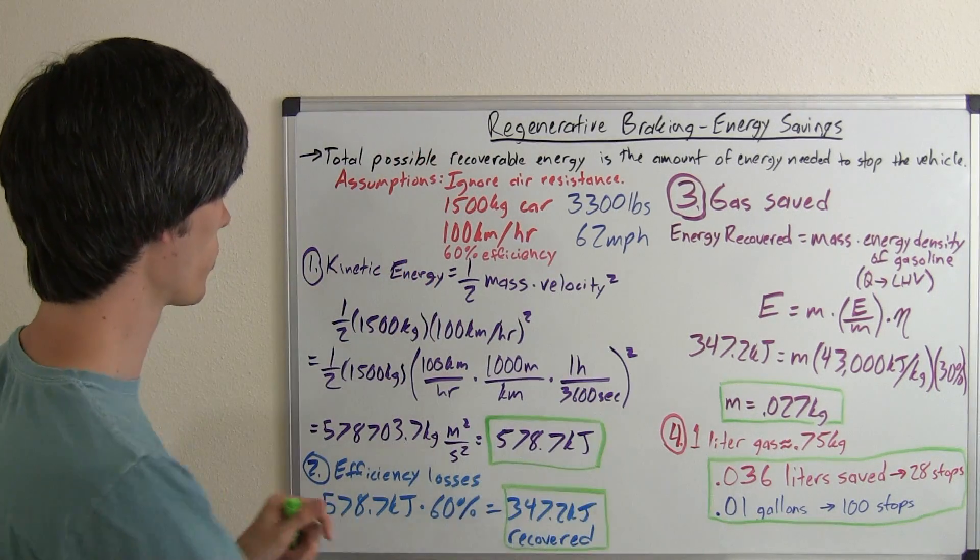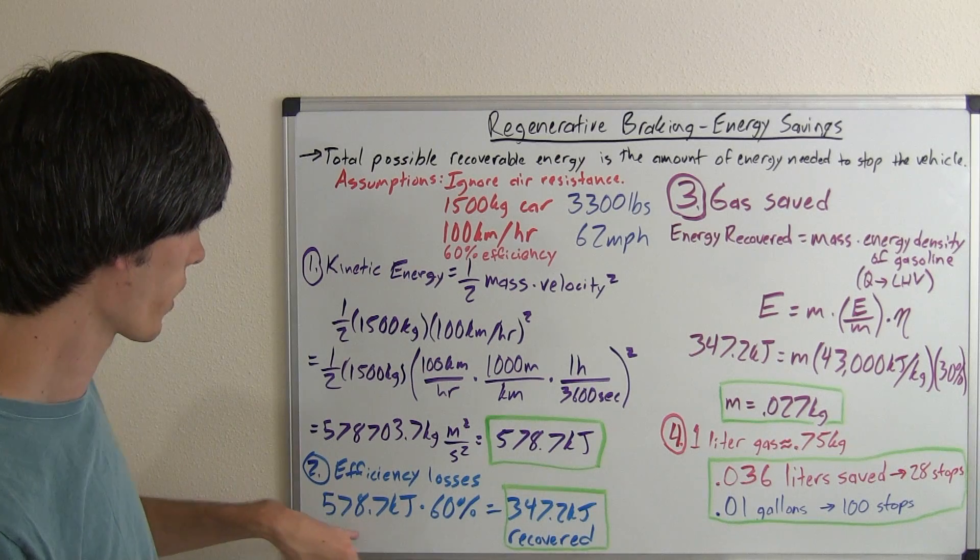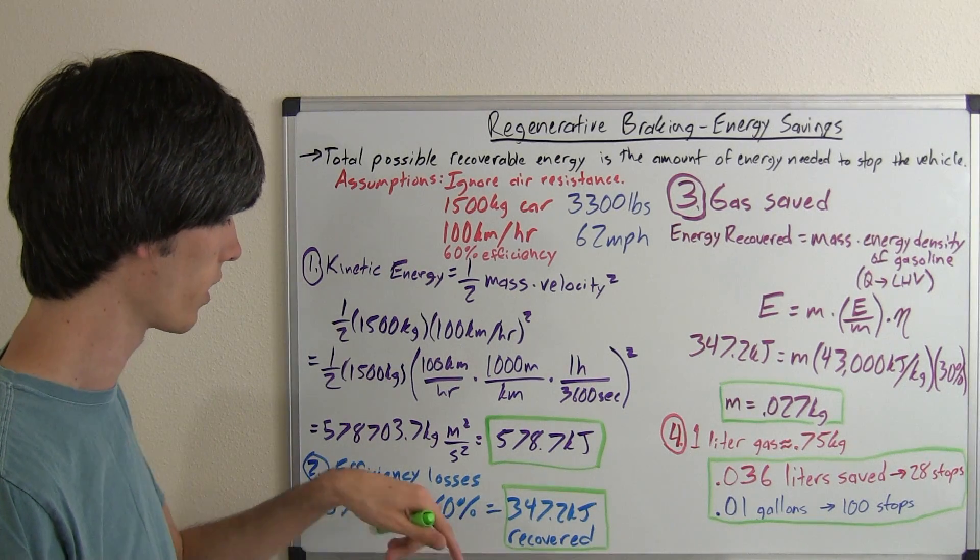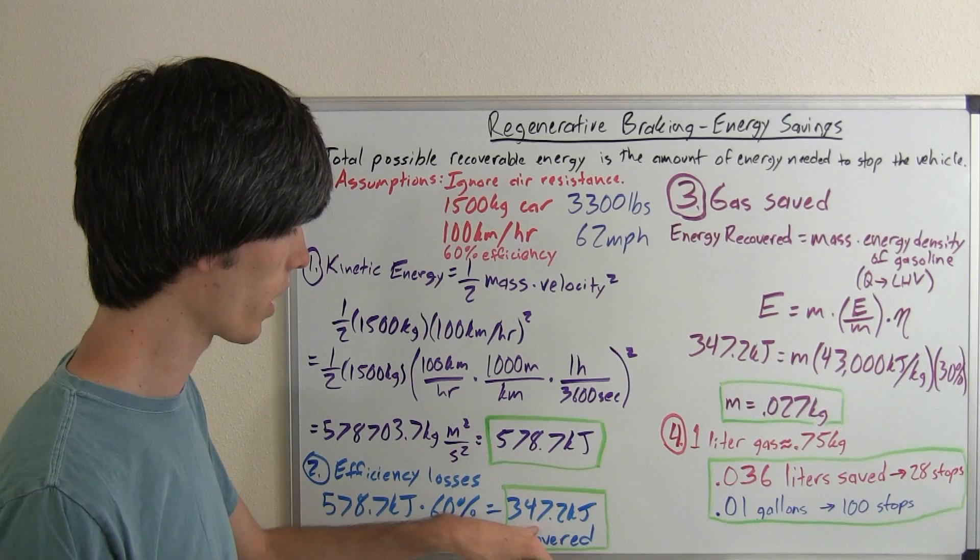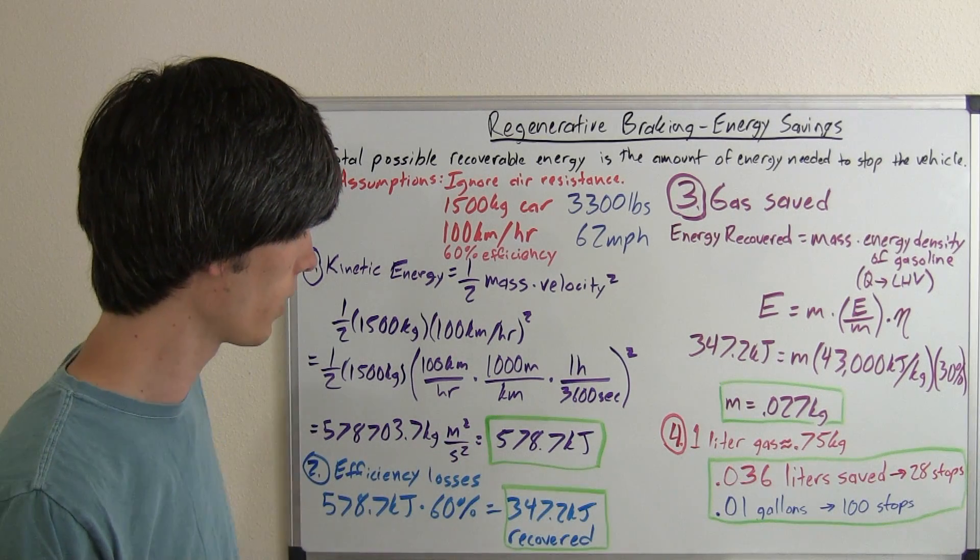Now, we said that our system is only 60% efficient, so we got to calculate our efficiency losses. 578.7 times 60%, we will recover about 350 kilojoules.